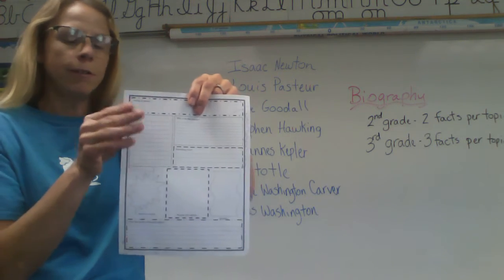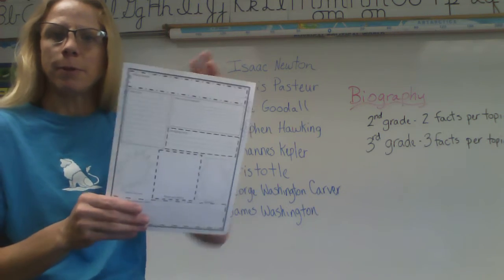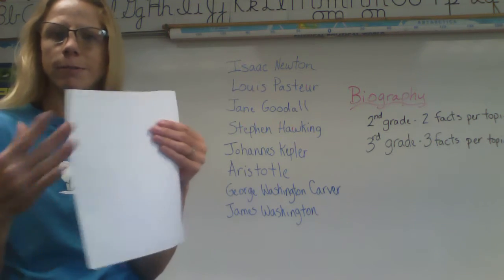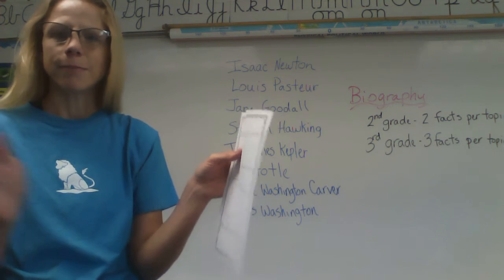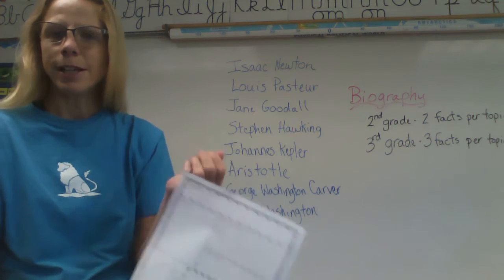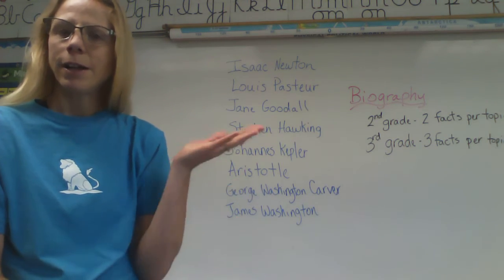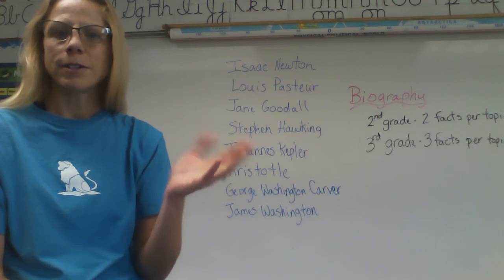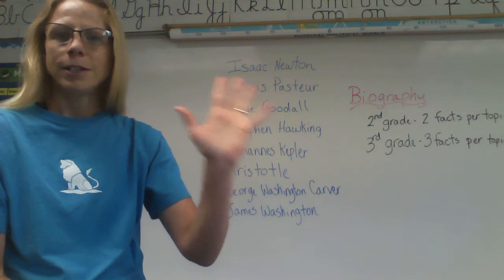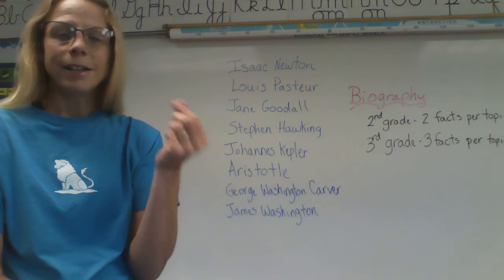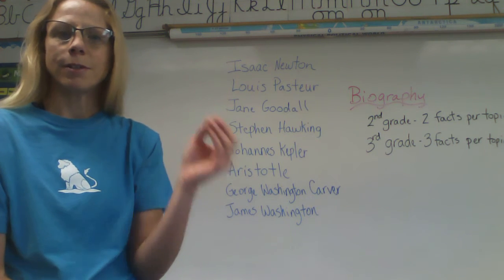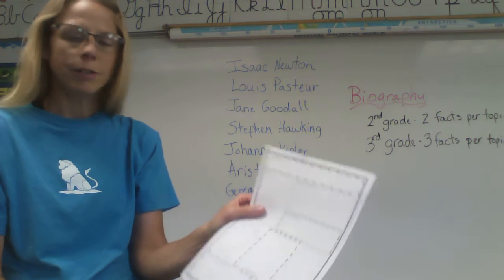After you get your facts on this piece of paper — and if you can't write that small, you can write facts on the back, that's totally fine — then you'll need to get your nice writing paper, the stuff we usually use for final drafts. You're only going to write one draft, so make it nice. That is in the week seven folder. Use your nice paper, and you'll have three paragraphs that you'll write.